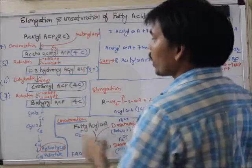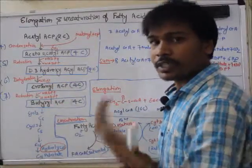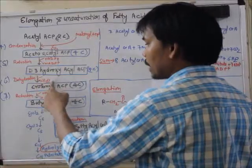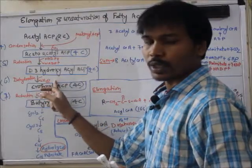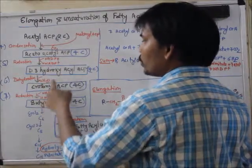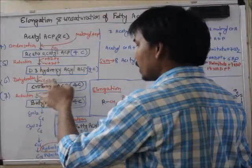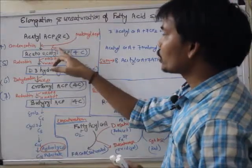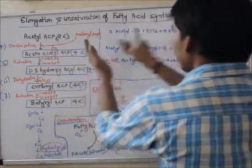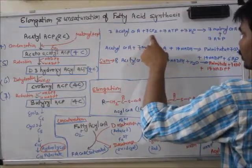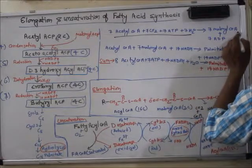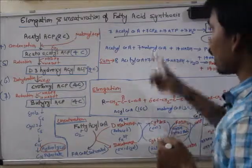Over seven cycles, seven NADPH is required for reductions at one stage and seven NADPH at another, totaling 14 NADPH. Seven H2O molecules are involved in dehydration steps, and seven CO2 molecules are released. The summary equation: seven acetyl-CoA plus seven CO2 plus seven ATP plus seven H2S produces seven malonyl-CoA plus seven ADP.